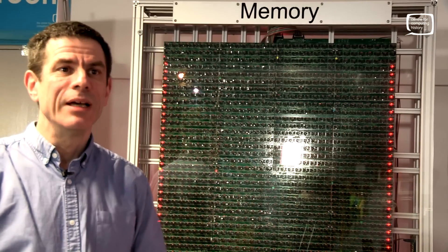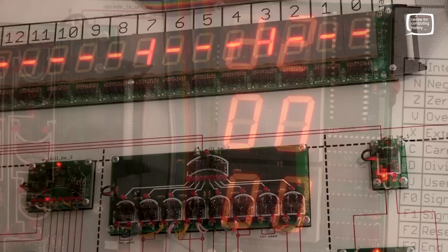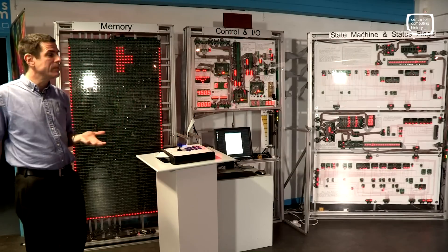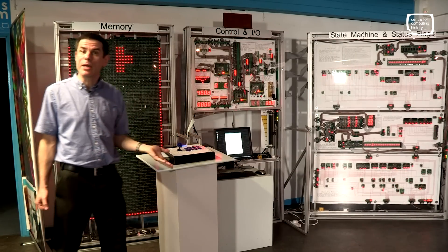Hello, I'm James Neiman, and this machine here, blinking away in the background, is the Megaprocessor. It's now at the Center for Computing History. I finished it in summer 2016.